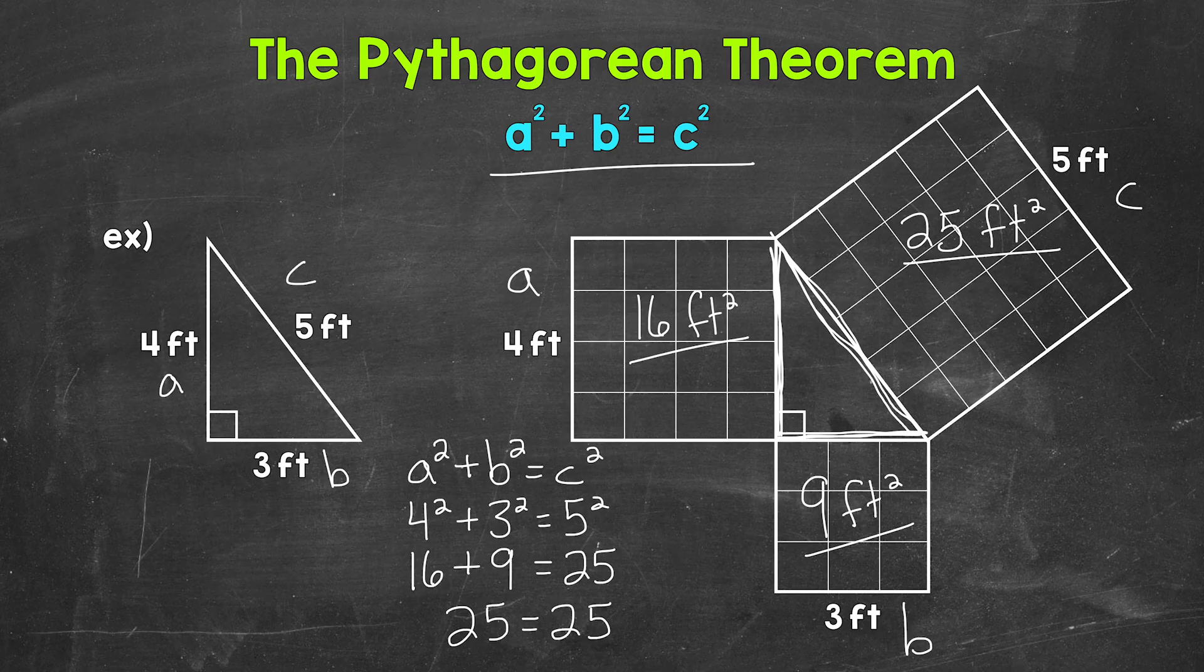We have the legs represented on the left side of the equation, a squared plus b squared. The sum of those legs squared was 25. And then the hypotenuse is represented on the right side of the equation. We have c squared. The hypotenuse squared was also 25.